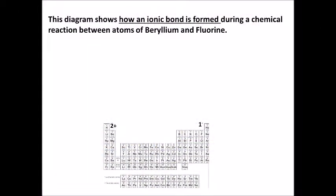This diagram is going to show you how an ionic bond is formed during a chemical reaction between atoms of beryllium and atoms of fluorine. Notice that the beryllium atoms and the fluorine atoms are on opposite sides of the periodic table.